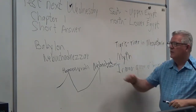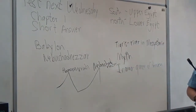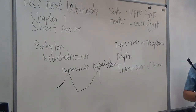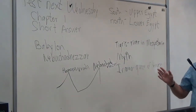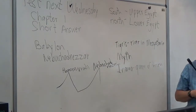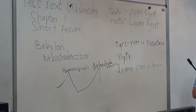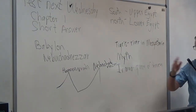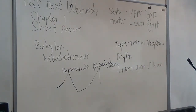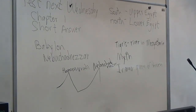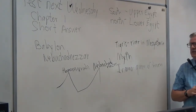Nebuchadnezzar's father had defeated the Assyrians by getting together with the Medes. The combined Babylonian and Median power defeated the Assyrians, who tried hard to rise again but never did. If you meet an Assyrian — there are supposedly 10 million Assyrians today — they will tell you they remember when they once had the greatest empire in the western world.